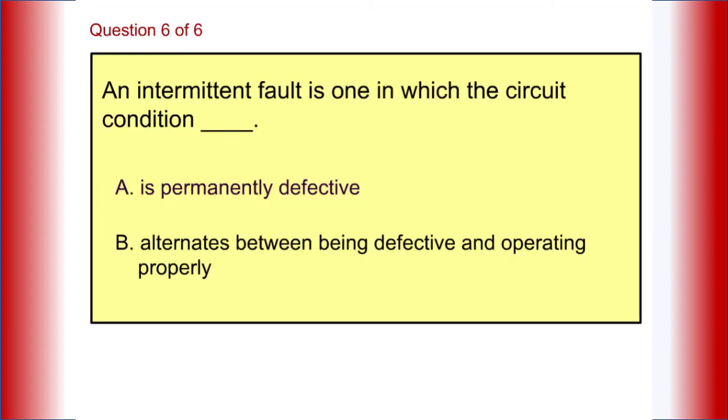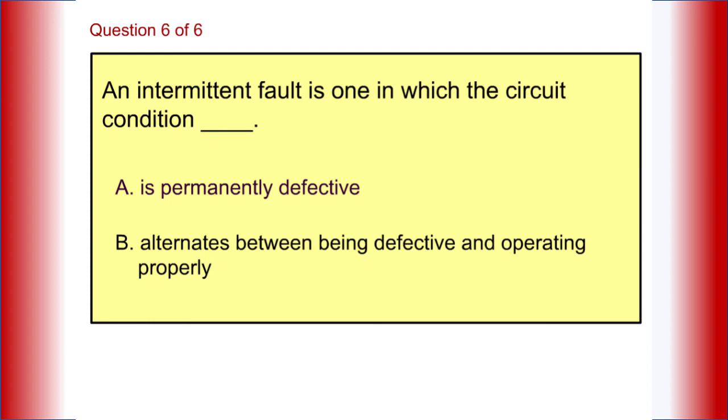An intermittent fault is one in which the circuit condition is: A, permanently defective, or B, alternates between being defective and operating properly. The answer is B, alternates between being defective and operating properly. You have completed this activity, Opens and Shorts.